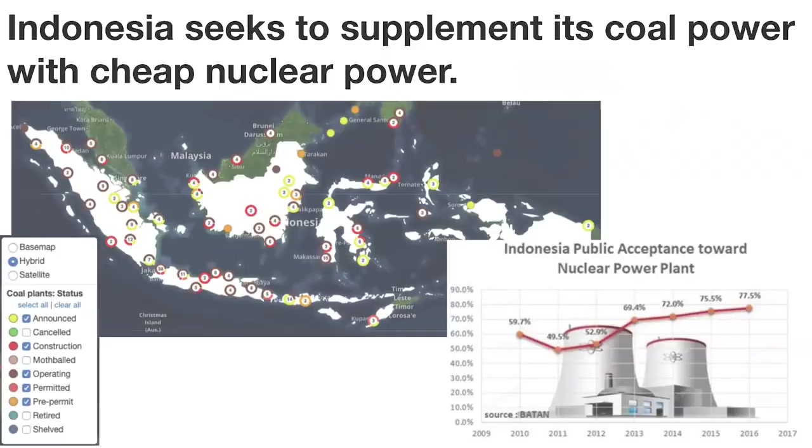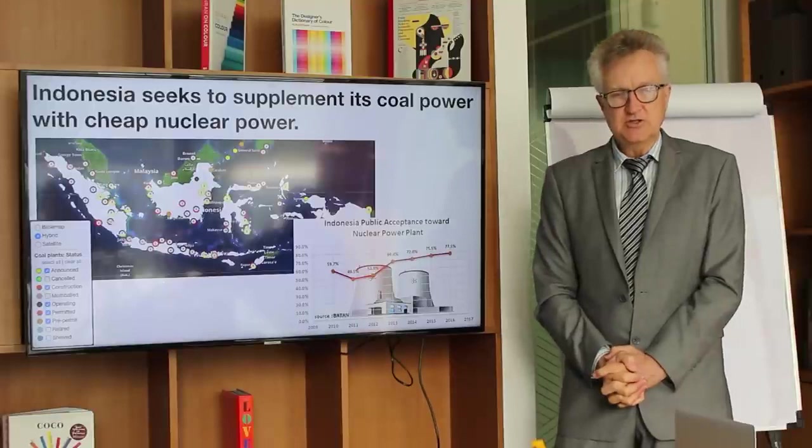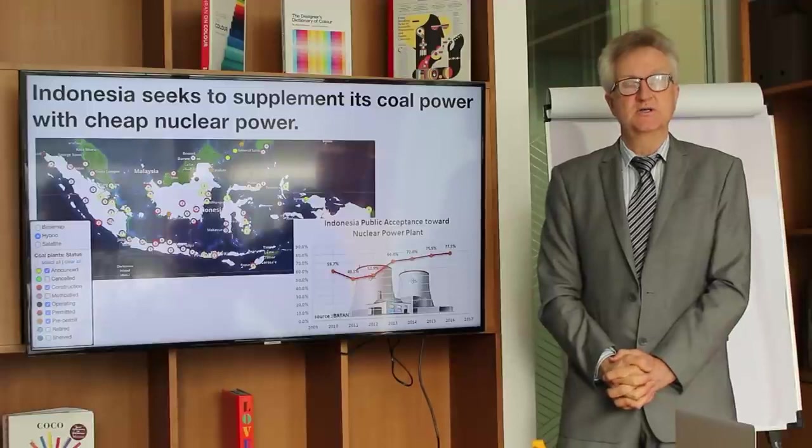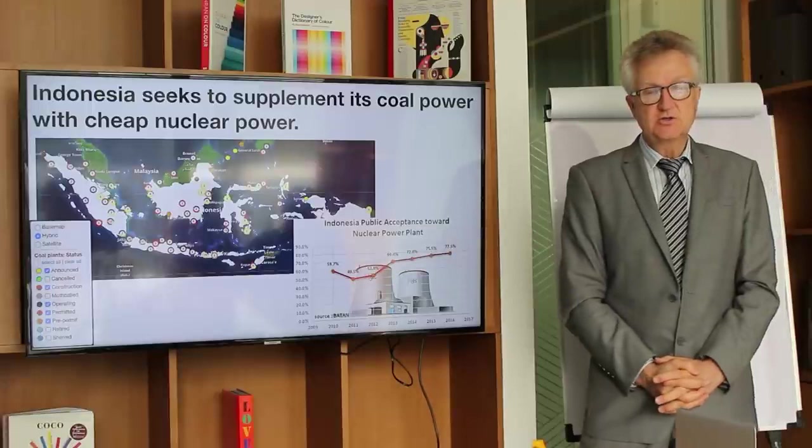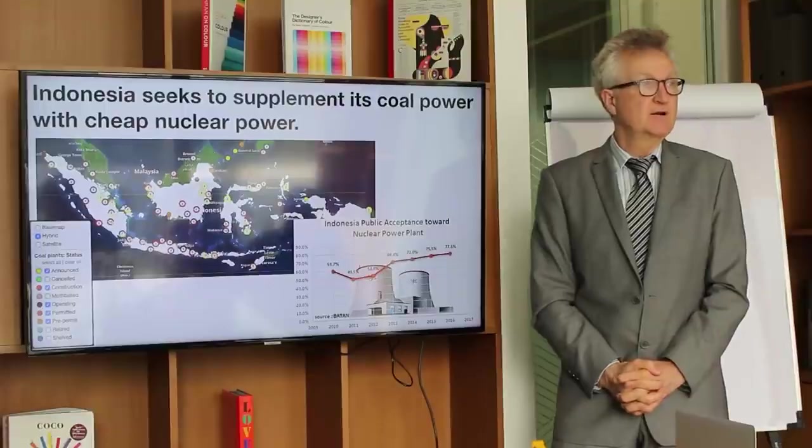All these little circles are coal plants either operating or under construction or permitted or getting ready to build. A developing nation, as soon as it can afford power, is going to buy the least expensive power, which in today's world is coal. So there's a lot of plants to expand with coal. Our goal is to give developing nations another choice, nuclear power at a price directly competitive with coal.